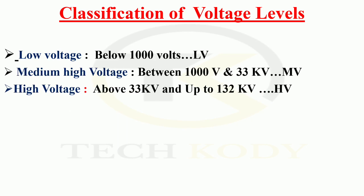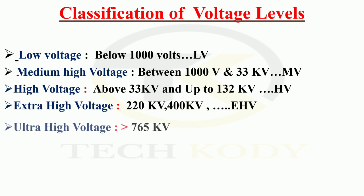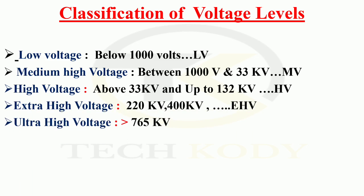High voltage, above 33 kV up to 132 kV, we call it as high voltage. Extra high voltage — 220 kV, 400 kV, up to 765 kV — we call it as extra high voltage. Ultra high voltage, greater than 765 kV, we call it as ultra high voltage.